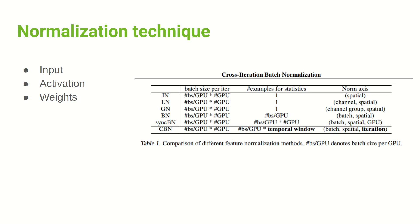If you have multiple GPUs, you can choose sync batch normalization to compute statistics across different GPUs. For example, if you can hold four images on a single GPU and have four GPUs, then you effectively have 16 images and can calculate statistics among them. Inside today's paper, Cross-Iteration Batch Normalization tries to cross the time domain — meaning across iterations — which is the time domain.